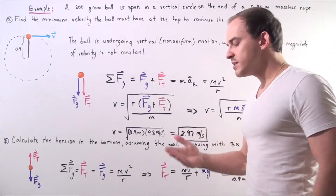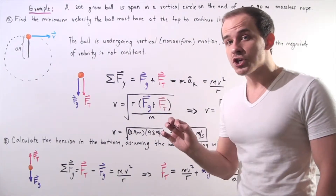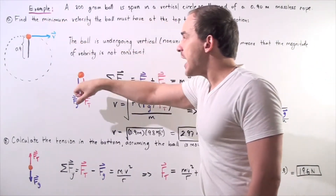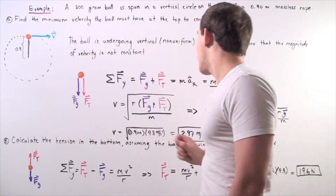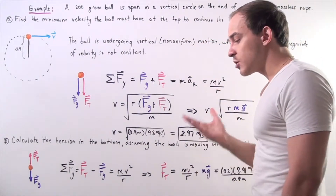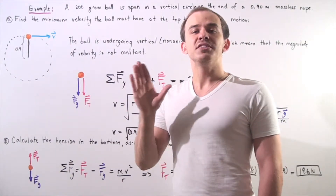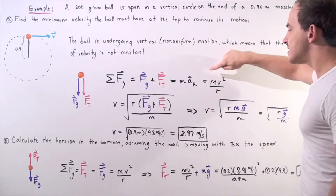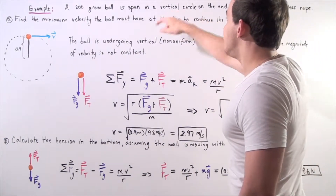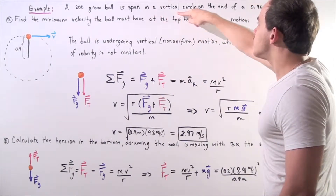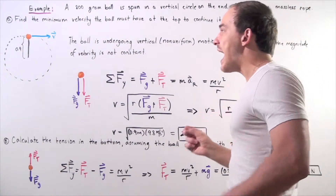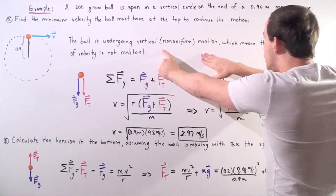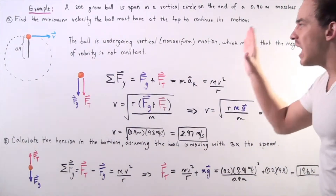This sum equals, according to Newton's second law, mass times radial acceleration. Our object requires centripetal (radial) acceleration for the motion to change and for the ball to continue in its circular pathway. Recall that centripetal acceleration equals velocity squared divided by the radius. Moving in a vertical circle means gravity acts on the object, so the ball undergoes vertical non-uniform circular motion.